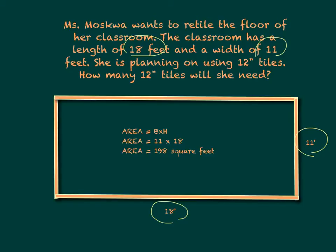We know that a 12-inch tile is the same as a 1-square-foot tile, so we want to know how many square-foot tiles she will need. We know that the formula for area is base times height, or length times width, so for this problem we're going to do 11 times 18.